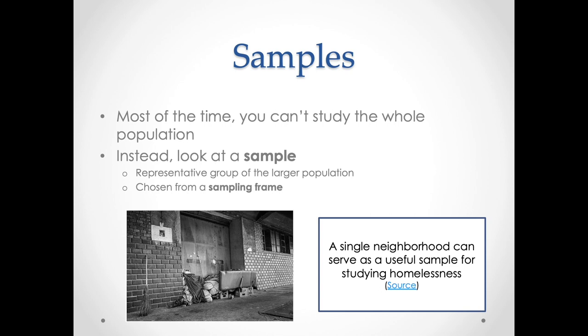When researchers use these words, they use them to mean distinct things. The population is everyone that you're interested in. The sample is some subselection of that population.